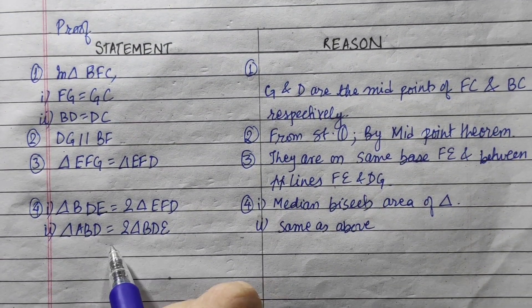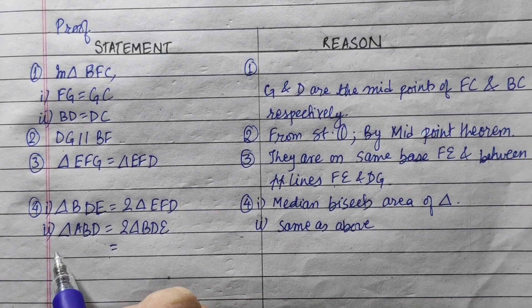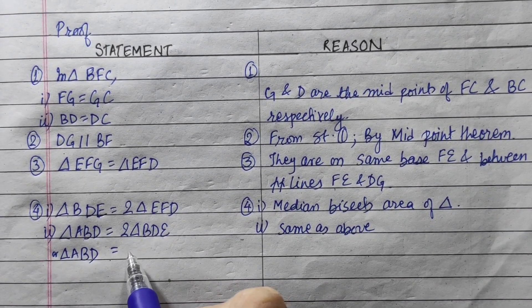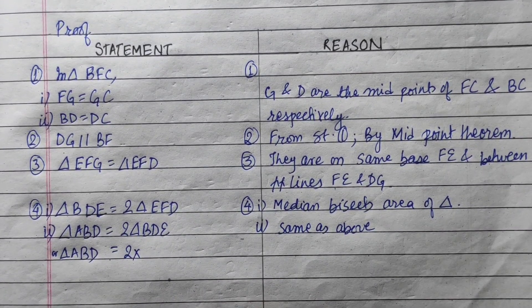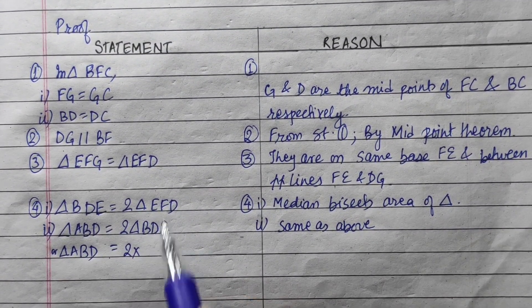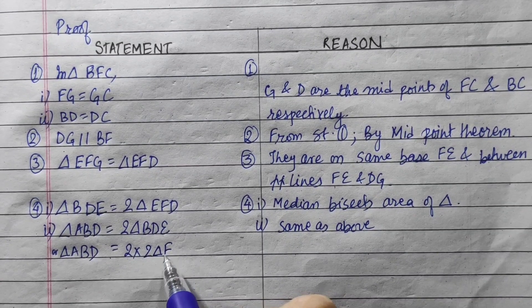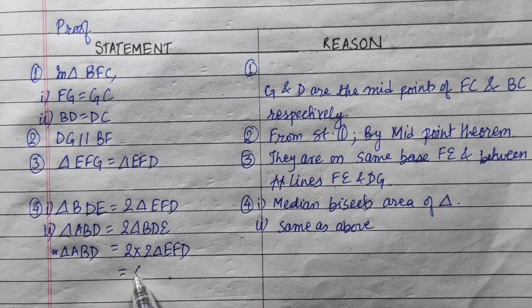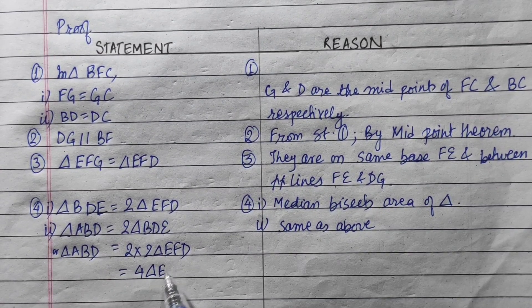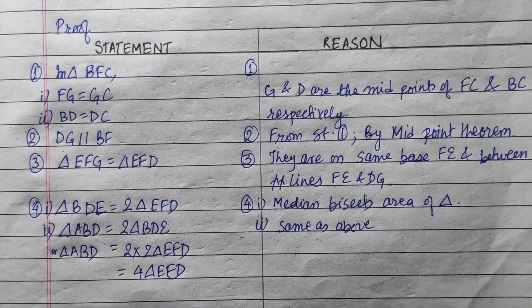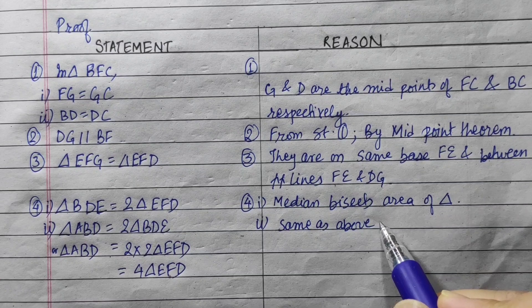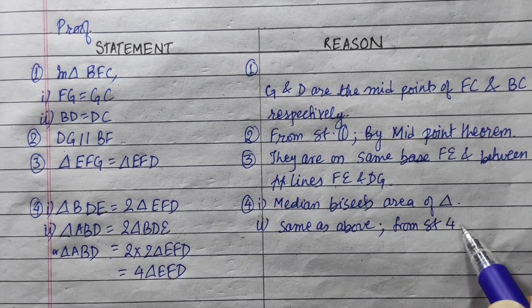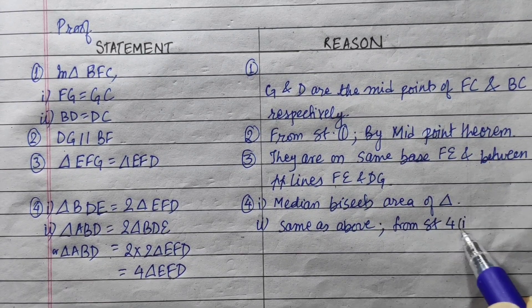We continue to replace: triangle ABD equals 2 times BDE, and BDE is twice triangle EFD. So triangle ABD equals 4 times triangle EFD, from statements 4 to 1.